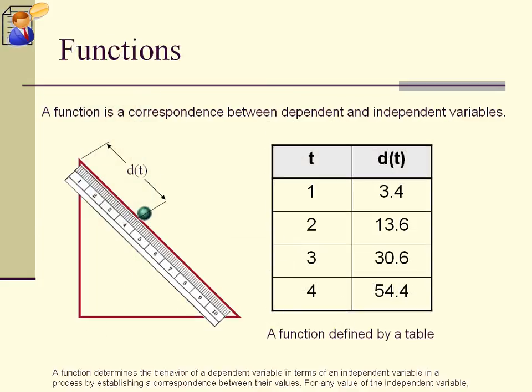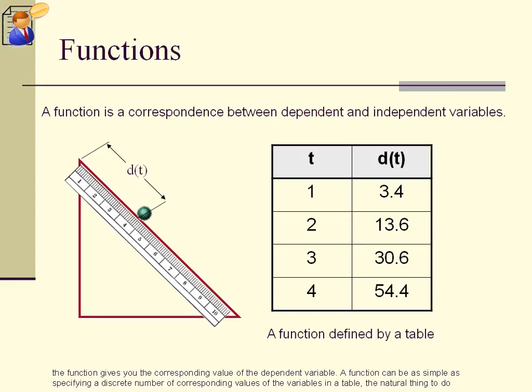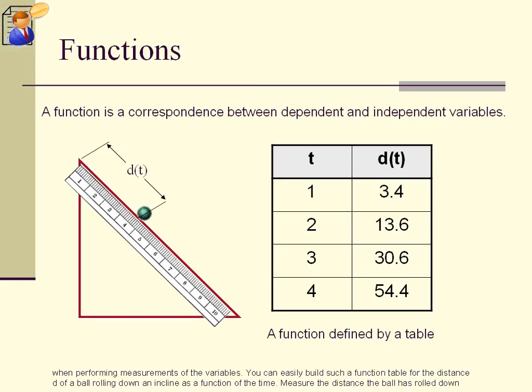A function determines the behavior of a dependent variable in terms of an independent variable in a process by establishing a correspondence between their values. For any value of the independent variable, the function gives you the corresponding value of the dependent variable. A function can be as simple as specifying a discrete number of corresponding values of the variables in a table, the natural thing to do when performing measurements of the variables.